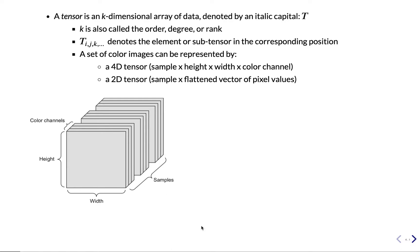A tensor is a k-dimensional array of data. So one-dimensional is a vector, two-dimensional is a matrix, but more generally a k-dimensional array is called a tensor, denoted by an italic capital T. K is also called the order, degree, or rank. Whenever we see italic T with subscripts i, j, k, it means the element at position i in the first dimension, j in the second, k in the third, and so on.